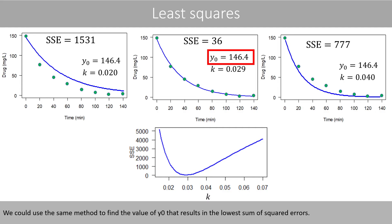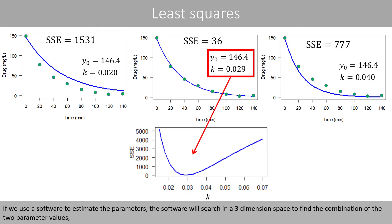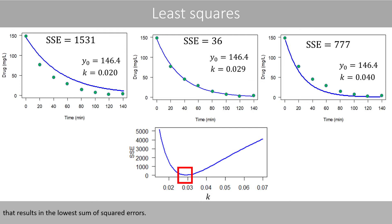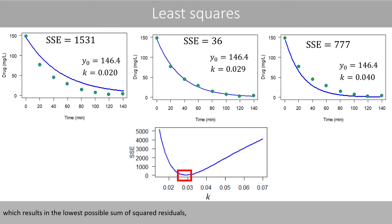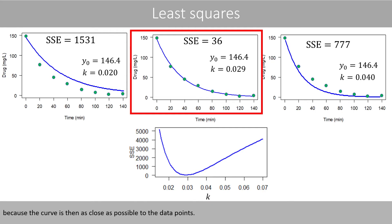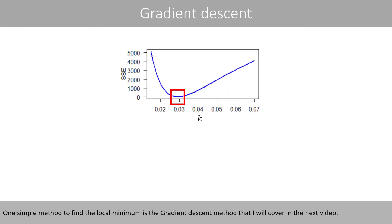We could use the same method to find the value of y0 that results in the lowest SSE. When software estimates the parameters, it searches in a three-dimensional space to find the combination of the two parameters resulting in the lowest sum of squared errors. This is how the method of least squares works: it finds the optimal parameter values that result in the lowest possible sum of squared errors, because the curve is then as close as possible to the data points. One simple method to find the local minimum is the gradient descent method, which will be covered in the next video.